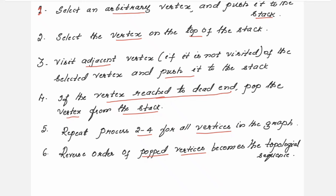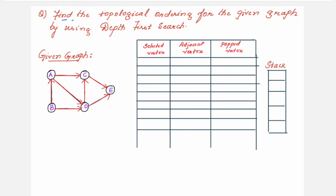Whatever order you get after reversing becomes the topological sequence. These steps will be much clearer once I explain with an example. The problem statement is: find the topological ordering for the given graph using the depth first search method. For this method, the given graph must be a DAG — a directed acyclic graph.